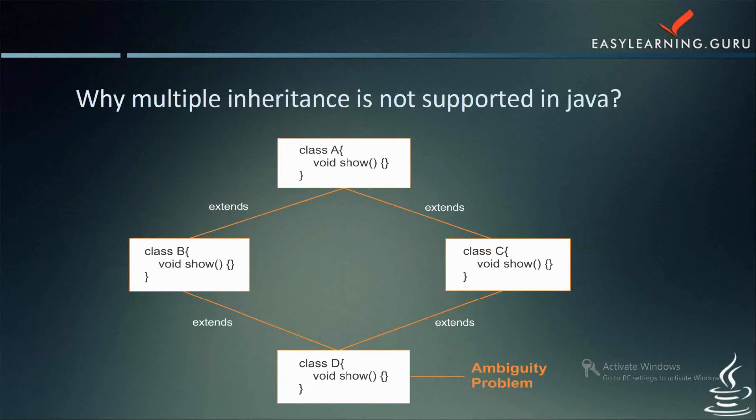The question comes: why is multiple inheritance not supported in Java? The first reason is the ambiguity around the diamond problem. Let's say I have a class A with a void show method, and B and C are derived from A, which also have a void show. Now class D is derived from B and C using multiple inheritance. If we refer to the void show method, the compiler will not be able to decide which show function should be invoked — whether it has to be invoked from class B or class C.